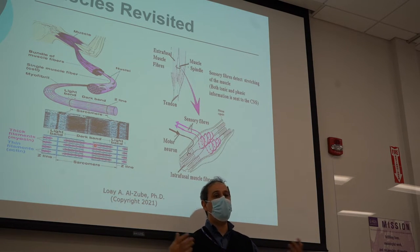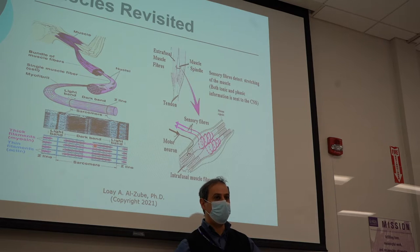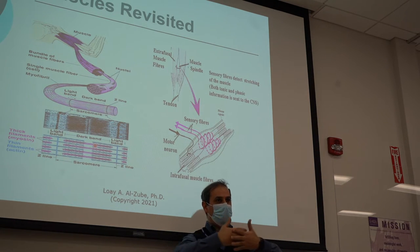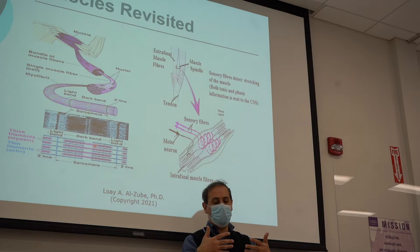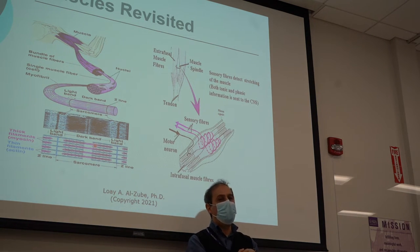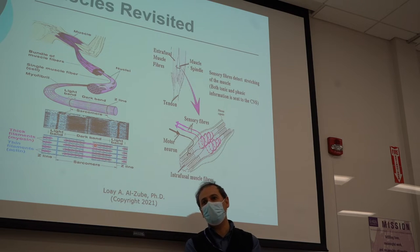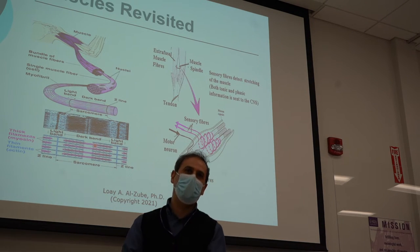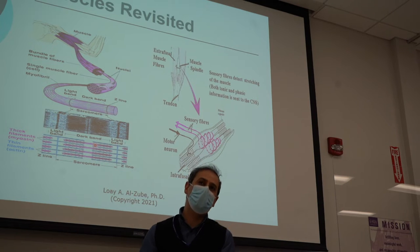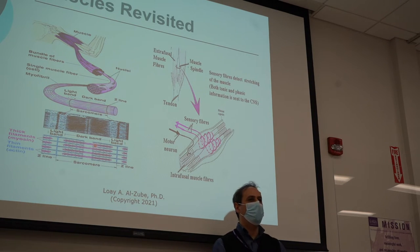To activate a muscle means that it's contracting — the myosin and actin filaments are sliding. There will be no contraction without a signal from the brain. What is the most dominant injury that can eliminate muscle contraction and control?